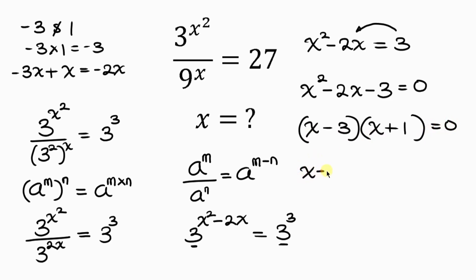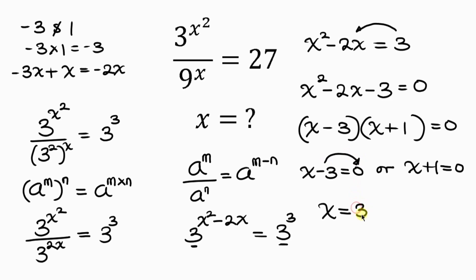So we have two cases: either x minus 3 equals 0, or x plus 1 equals 0. For the first case, x equals 3. For the second case, x equals negative 1. In a question like this, it is good that we check our answers to see which one is really correct.